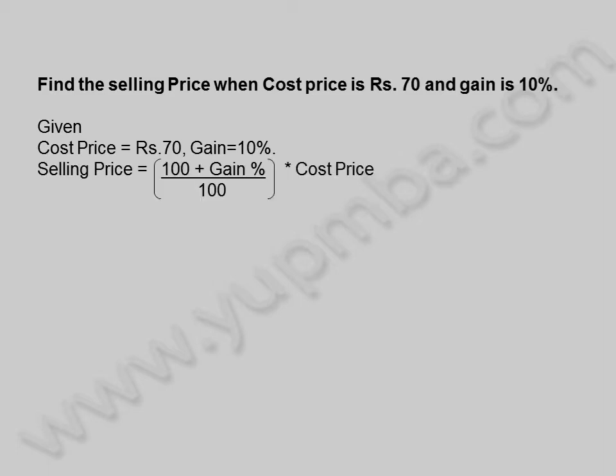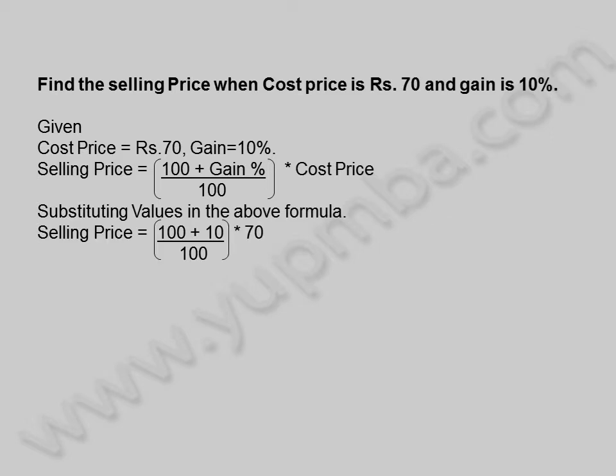Selling price is equal to (100 plus gain percentage) divided by 100, into cost price. Substituting values in the above formula: selling price is equal to (100 plus 10) divided by 100, into 70.